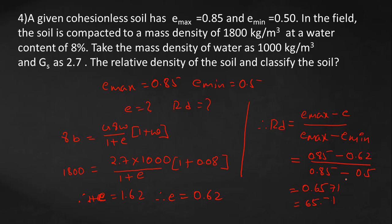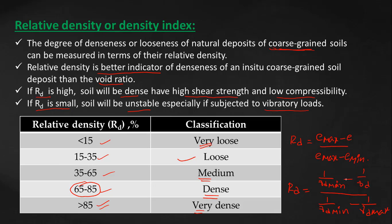From the table, if the value is between—see the first slide—our value is 65.71, so it means that our soil is dense soil. A soil with relative density of 65.71 is dense soil.